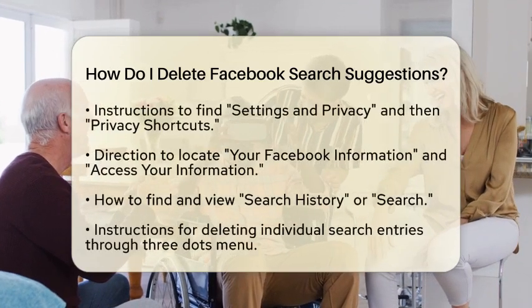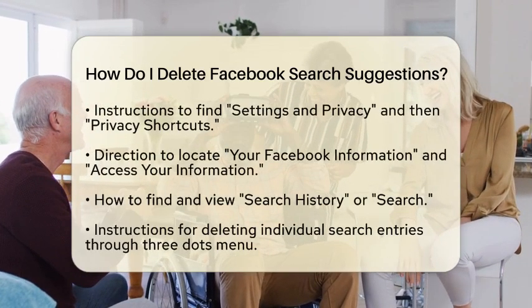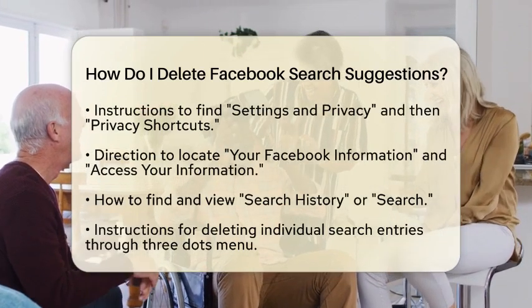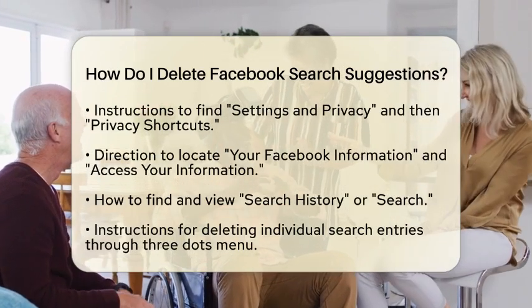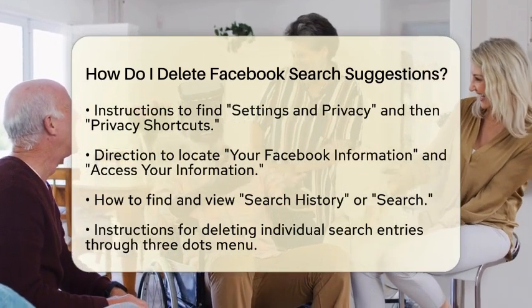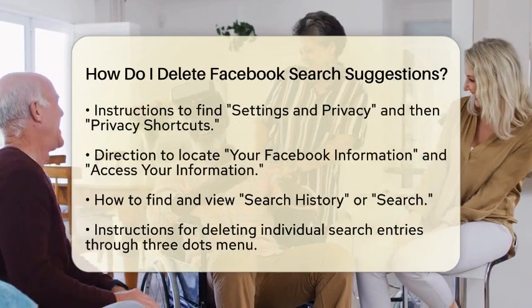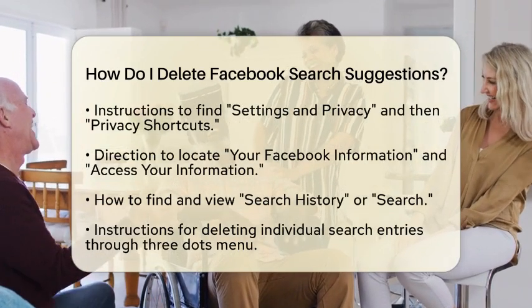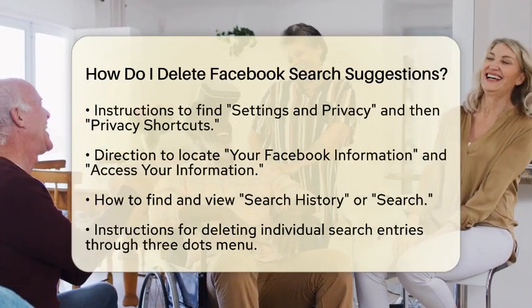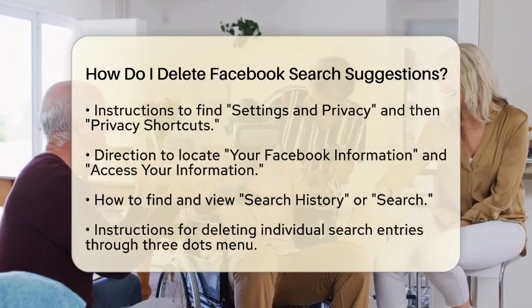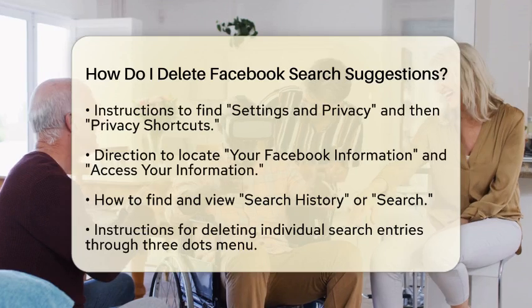Tap on that option and then select Privacy Shortcuts. Now look for a section called Your Facebook Information. Here, you will find Access Your Information. Tap on that and then locate Search History or simply Search. This will show you all your past searches.